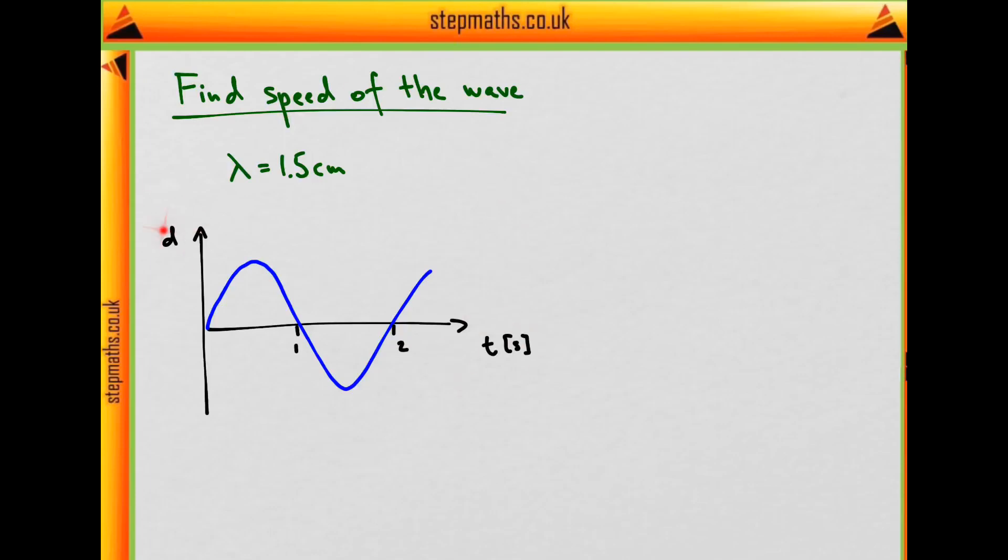So can you guess which formula would be useful to find the speed given wavelength and this graph? Well we have this formula which gives us the speed in terms of wavelength and period, and we can find the period from this graph.